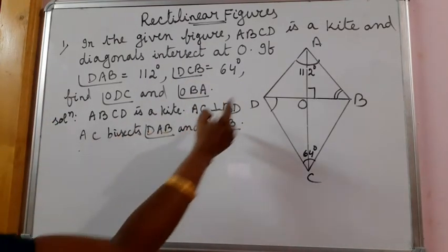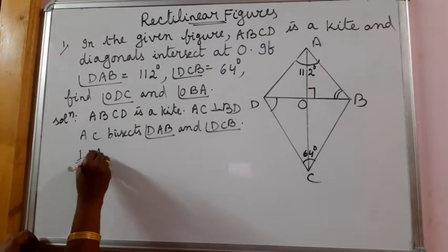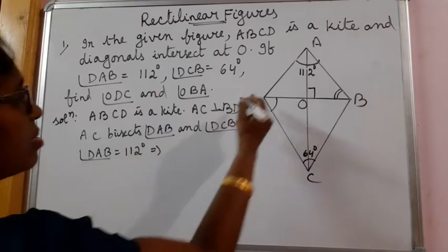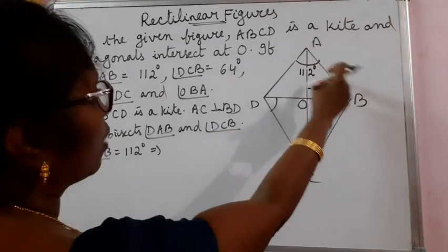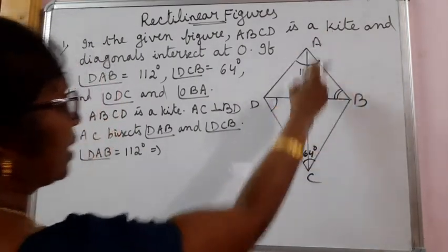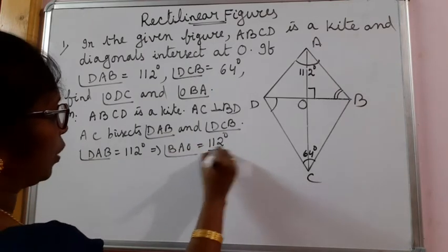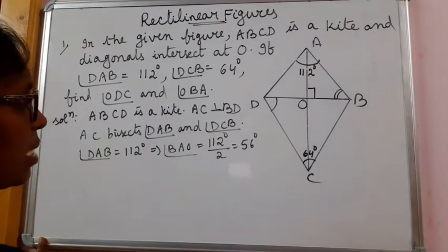So angle DAB is given 112 degrees. That implies we have to find BAO. Let us find BAO is equal to 112 by 2, that is 56 degrees. Let me keep this one aside.